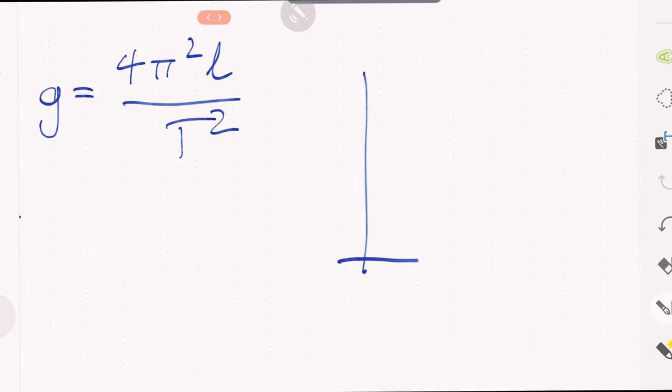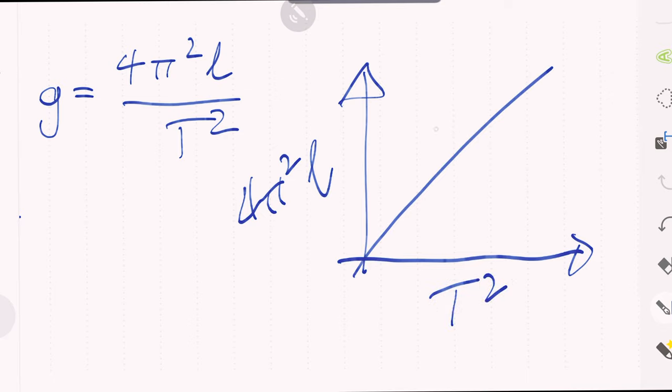So that's just calculating g arithmetically for one length, but it's always going to give you a much more accurate answer if you think about your result as the gradient of a graph. So I suggest you go ahead and think about 4π²L being your y-axis, T² being your x-axis, and then g is the gradient, if you like. The difference in y is the top of the fraction, the difference in x is the bottom of that fraction, so g is the gradient.